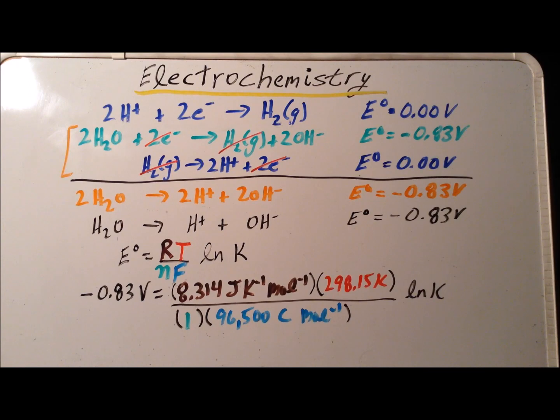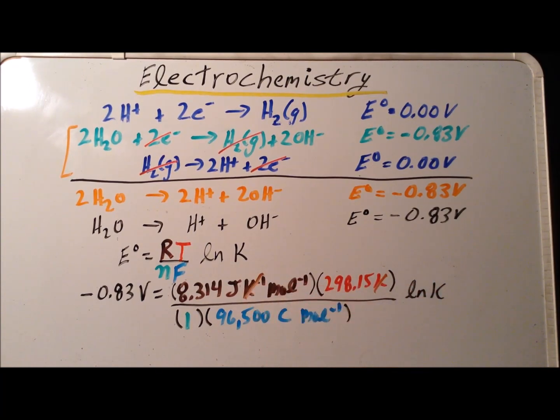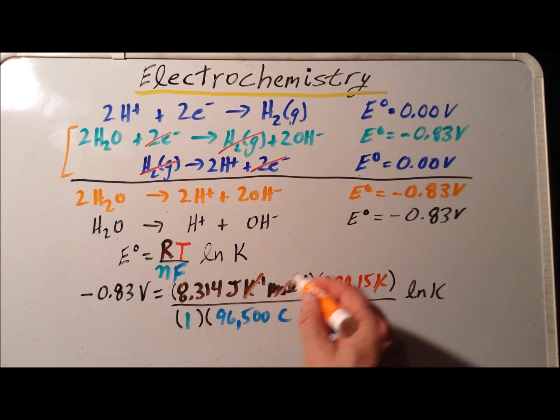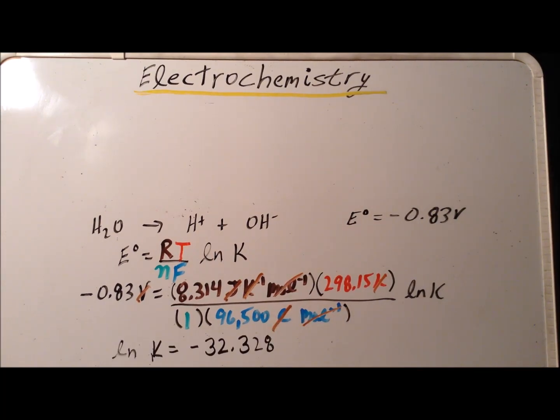Now we can begin to cancel units. We notice that kelvins and inverse kelvins will cancel. We notice that inverse moles and inverse moles will cancel. And we're left with the only units are going to be joules per coulomb, which is exactly the same as voltage. So I can cancel voltage and joules per coulomb. After some minor algebra here, we get that the natural log of k, our equilibrium constant, is going to be equal to minus 32.328.